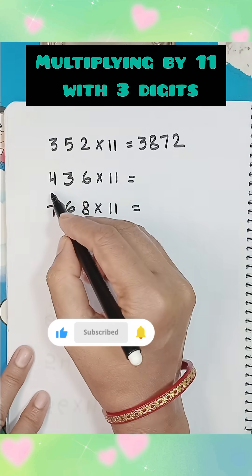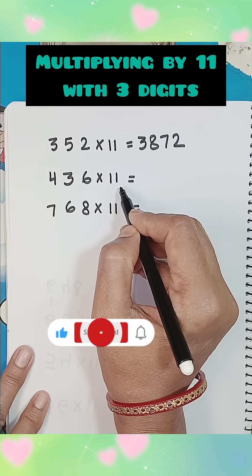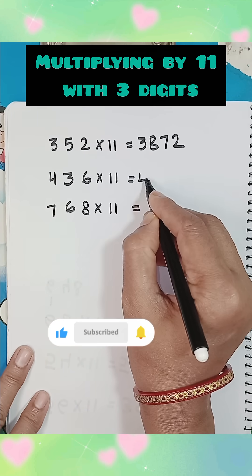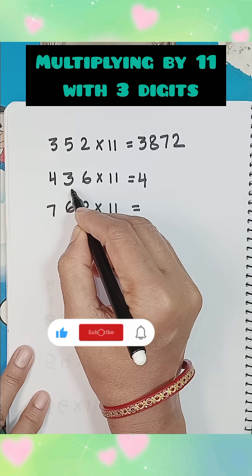In the same way multiply 436 by 11, write 1st digit, add 1st and 2nd digit, it will be 7.